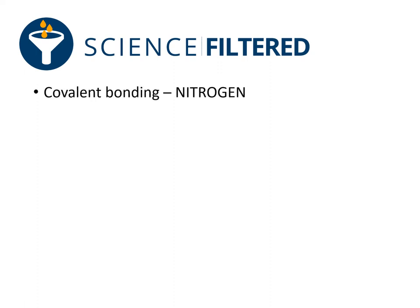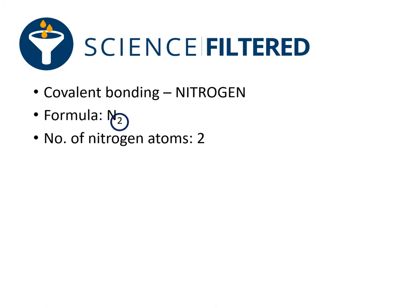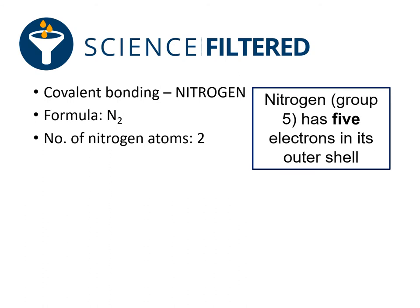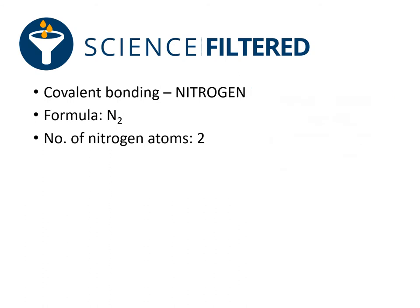The dot and cross diagram for a nitrogen molecule starts with us looking at the formula. Nitrogen has a formula of N2, which tells me there are two nitrogen atoms because of that little 2 next to the N. I know that nitrogen in Group 5 has 5 electrons in its outer shell. So I'm going to draw two nitrogen atoms, both with 5 electrons in their outer shell.